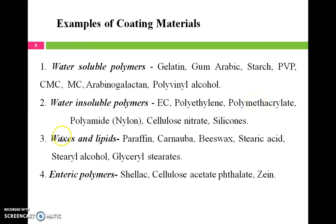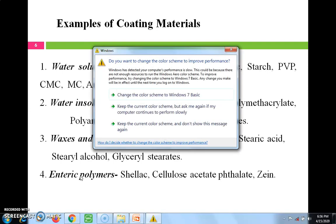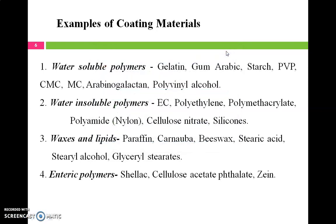Waxes and lipids can also be used for prolonging action as well as for polishing — for example, paraffin, carnauba wax, beeswax, and stearic acid. Enteric coating polymers can also be used for microencapsulation, like shellac and cellulose acetate phthalate. These polymers are generally used to target the distal part of the GIT, that is the colon.